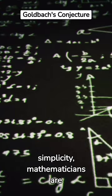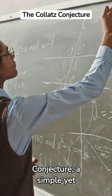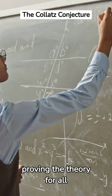Next is the Collatz Conjecture, a simple yet unsolved mathematical puzzle. Despite its apparent simplicity, proving the theory for all numbers remains an open question in mathematics.